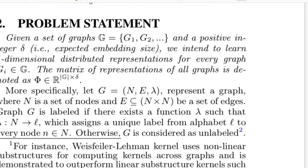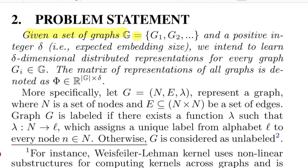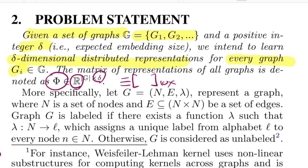Let's look at the formal problem statement. We are given a graph set G containing many graphs, and we define a parameter delta which is the expected embedding size — how many dimensions we want to represent a graph in, such as 50, 100, or 150. The idea is to learn a delta-dimensional representation for every graph G_i belonging to the larger set G. In matrix terms, we learn a matrix phi in real space, a 2D matrix where rows are graphs and columns have size delta.